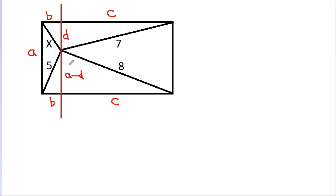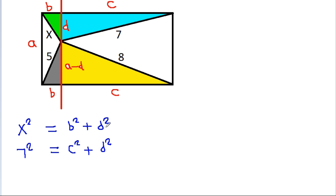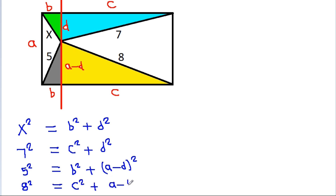And now we have 4 right-angle triangles: triangle 1, triangle 2, triangle 3 and triangle 4. In the green triangle, we can get x² = B² + D². In the blue triangle, we can get 7² = C² + D². From the gray triangle, we can get 5² = B² + (A-D)². And from the yellow triangle, we can get 8² = C² + (A-D)².